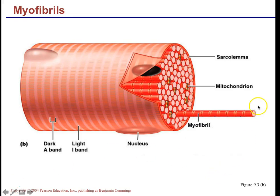The muscle cell is composed of many muscle fibrils — also called myofibers — which are themselves made up of dark and light banding contractile proteins. So a muscle cell or muscle fiber is composed of many myofibrils, which are made up of the dark and light banding contractile proteins.